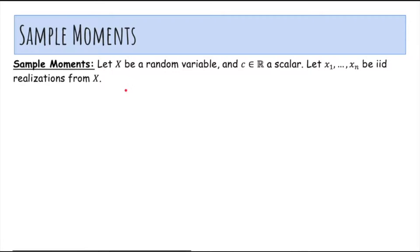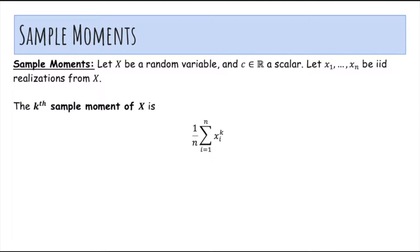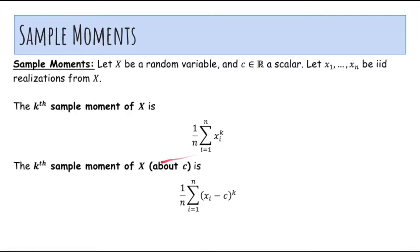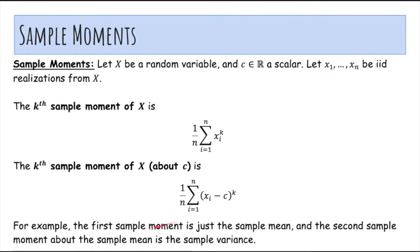So what's a sample moment? If x is a random variable and c is a scalar, and x1 through xn are iid realizations or samples from x, the kth sample moment of x is basically the average value of xi to the k — that is, 1 over n times the sum from i equals 1 to n of xi to the kth power. And the kth sample moment of x about c is the average of xi minus c to the kth power over all data samples. For example, the first sample moment is just the sample mean, and the second sample moment about the sample mean is the sample variance.